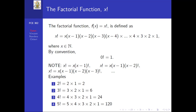The factorial function — x factorial — is written with the notation x! and is defined as x times (x minus 1) times (x minus 2) times (x minus 3), continuing down to 4 times 3 times 2 times 1. In this definition, x is taken to be a natural number. To define its factorial, you multiply that natural number by each preceding integer down to 1.